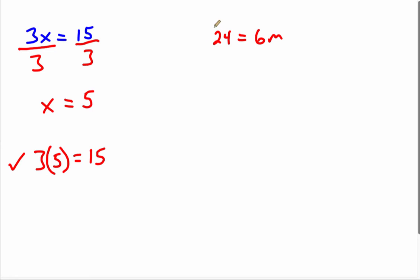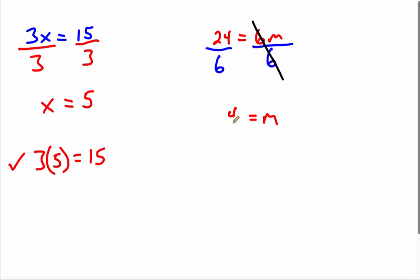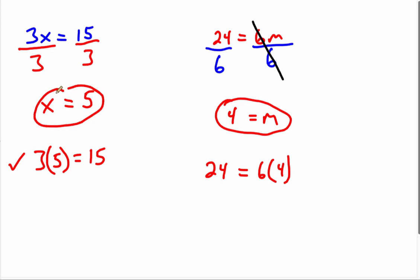In this case, we have the variable on the other side, but it will be done the same way — we follow the variable. The variable is m, and it is being multiplied by six, so we can use the inverse operation. The inverse of multiplication is division, so we're going to divide by six. That cancels it out, leaving us with m, and 24 divided by six is four. We can check by going back to the original equation: six times four equals 24. So m equals four is the correct answer.